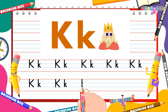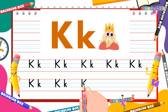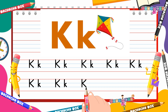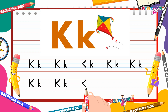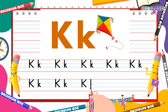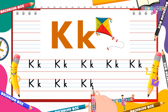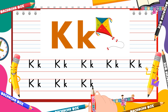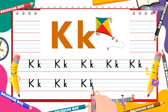One big standing line with two diagonal lines going up and down makes capital K. Now smaller in size, one big standing line with two diagonal lines going up and down makes small k.